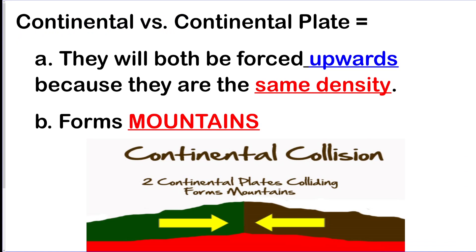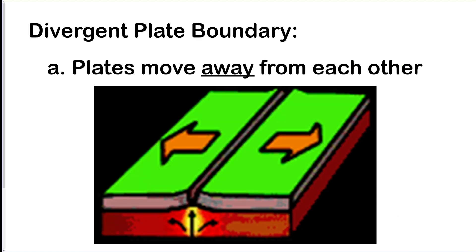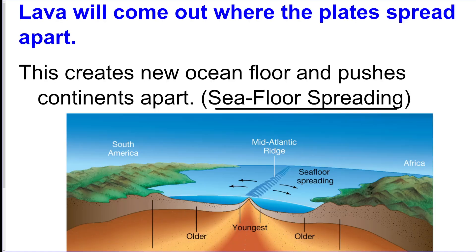For continental plate versus continental plate, they hit each other with the same density, so they both go up and form a mountain range. Then we have divergent boundaries — when plates move away from each other, making a gap between them. That gap exposes the mantle and is called a rift valley, where lava comes out.